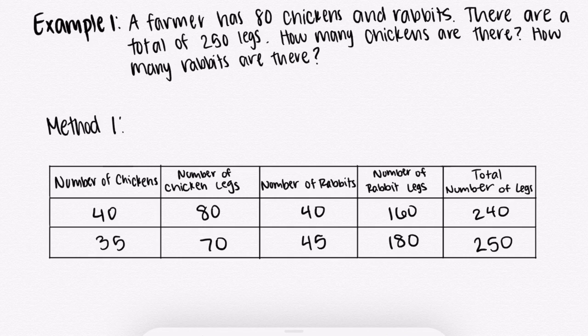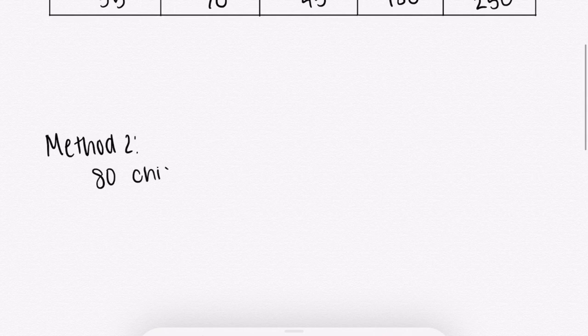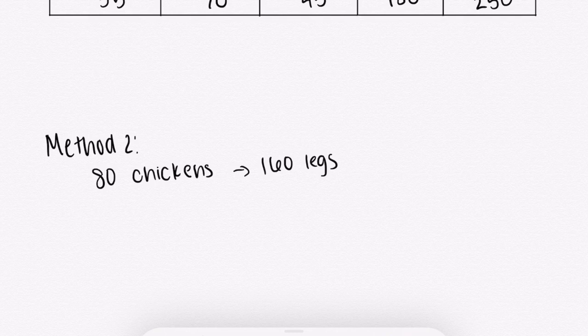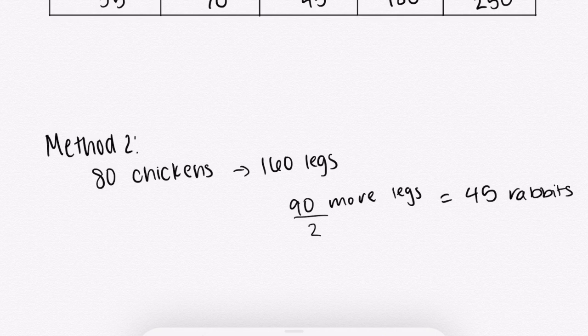For the second method to solve the chicken and rabbit problem, you solve by assuming. First, you assume that all of the animals are chickens. If they were all chickens, you would have 80 chickens with two legs each, which means 160 legs. But the question says there are 250 legs in total, so you need 90 more legs. Since rabbits have two more legs than chickens, every time you add a rabbit and take away a chicken, you get two more legs. So to get 90 more legs, you divide 90 by two to get 45 rabbits, which means there are 45 rabbits and 35 chickens.